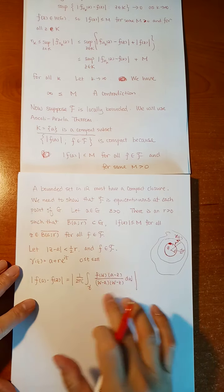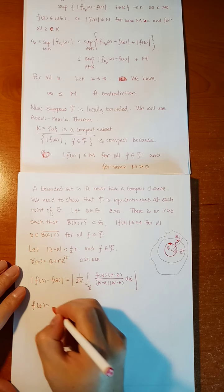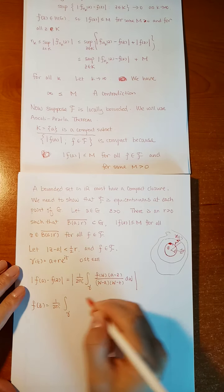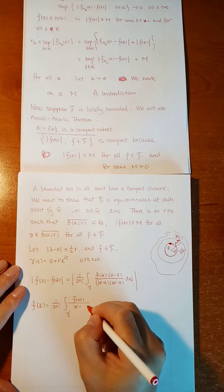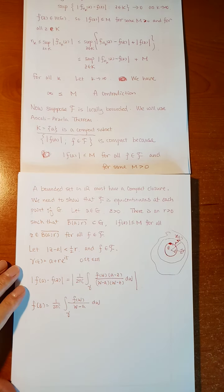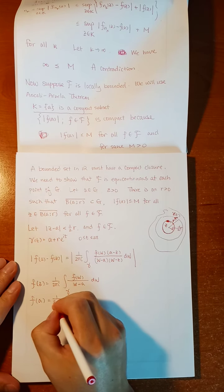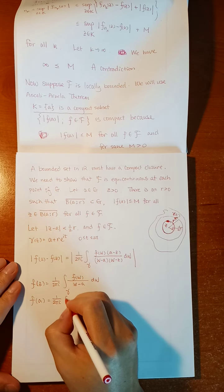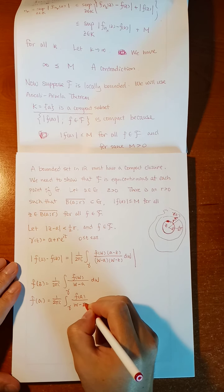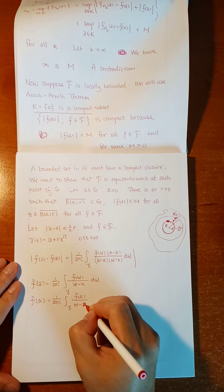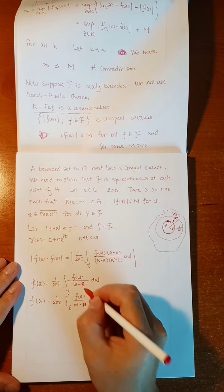Do you remember how to get this? You write the Cauchy formula for f(z) and f(a) separately — using (1/2πi)∫_γ f(w)/(w − a) dw for f(a), noting that equals 1 — then do the subtraction to obtain this formula.